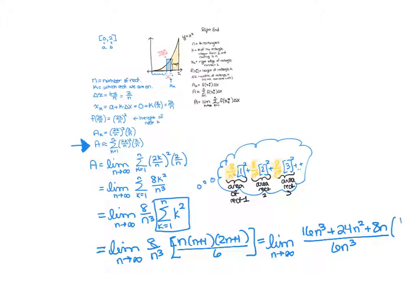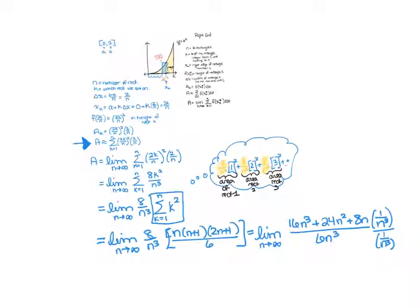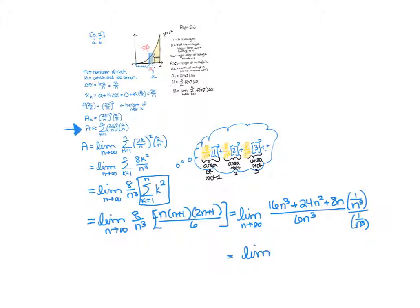And now we divide through by the highest power of n in the bottom because we're getting an infinity over infinity. And we're almost done here. Limit as n goes to infinity of 16 plus 24 over n plus 8 over n squared, over 6. n cubed over n cubed, so those go away, so just 6 on the bottom. And on the top we notice this is going to 0 and this is going to 0, so we're left with just 16 over 6.